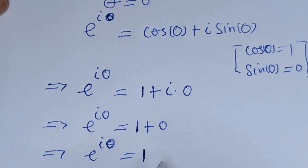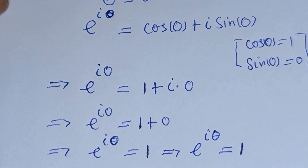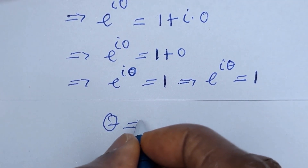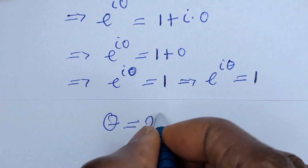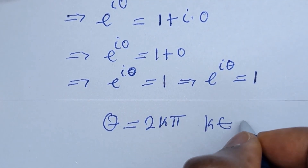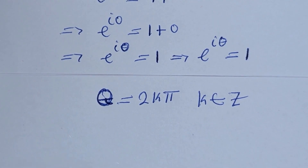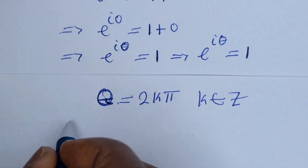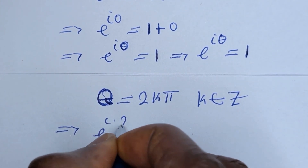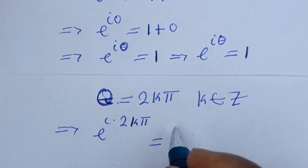E of i times 0 is equal to 1. And since e of i times 0 equals 1, then theta generalizes to 2k pi, where k is an integer. So we can replace theta by 2k pi. This gives us e raised to i times 2k pi is equal to 1.